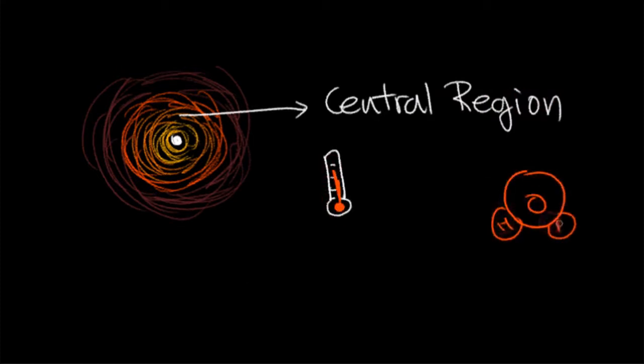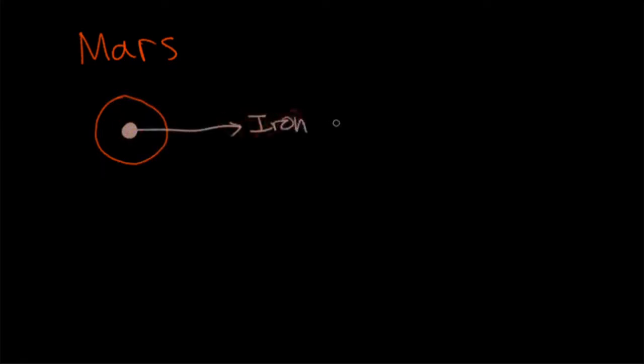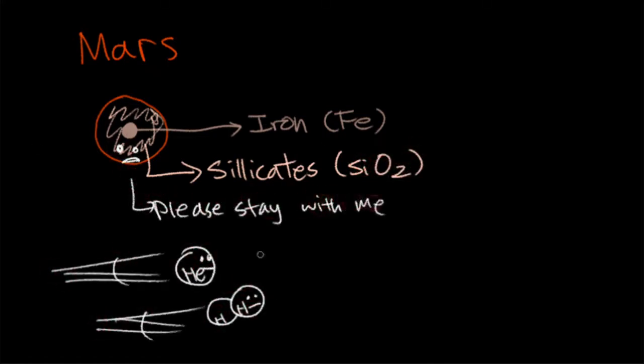Here, it is too hot for substances with low melting points such as water and methane to form solid ice. So the terrestrial planets that form near the sun are smaller and denser and are mainly made of metals and rocks instead. Due to their smaller masses, they gravitationally attract less gas and hence form thinner atmospheres.